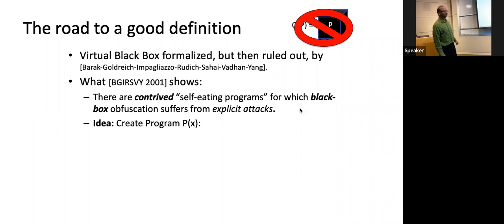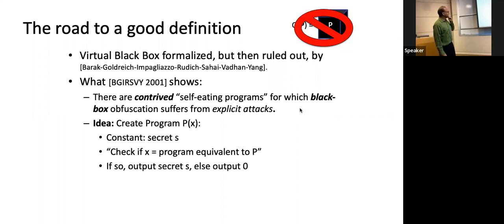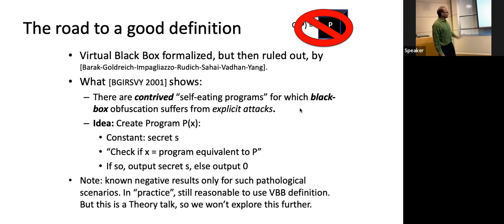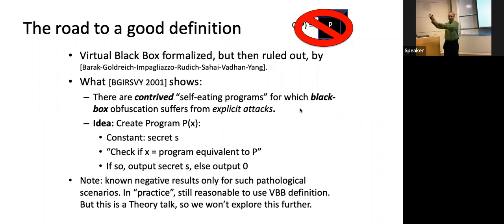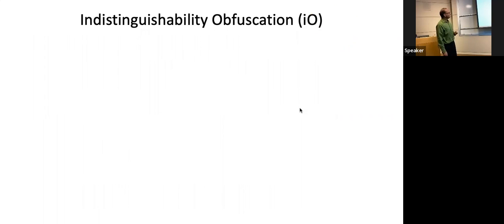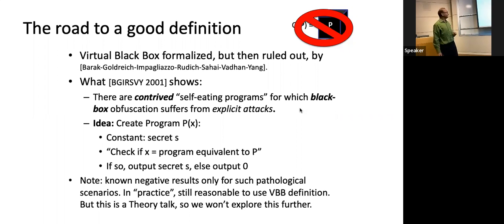That was a high-level explanation. An important point, especially for this talk, is that these negative results are only known for very pathological examples. As an initial heuristic for understanding what we can do with obfuscation, it's still very useful to think about things in terms of a virtual black box — something you don't have access to internally but can query.